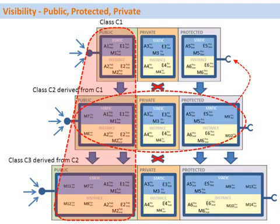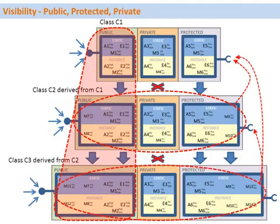The protected section can be accessed only through the subclass. This means the protected section of class C1 can only be accessed by its subclass C2, or by class C3, which is the further subclass of C2. So the protected section of a class is accessible only to its subclasses.